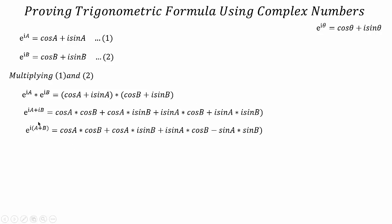For the simplification we can take i common, that will be e^(i(A+B)). Then we multiply i with i, and since i² = -1, we get minus 1 here.